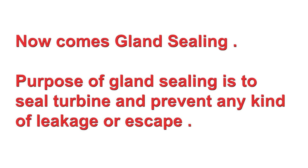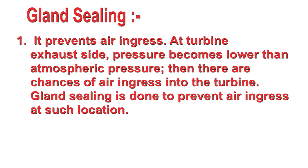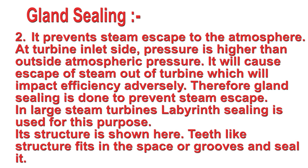Next comes gland sealing. The purpose of gland sealing is to seal the turbine and prevent any kind of leakage or escape. It prevents air ingress at the turbine exhaust side, where pressure becomes lower than atmospheric pressure, creating chances of air ingress. It also prevents steam escape to the atmosphere at the turbine inlet side, where pressure is higher than atmospheric pressure, which would impact efficiency adversely.